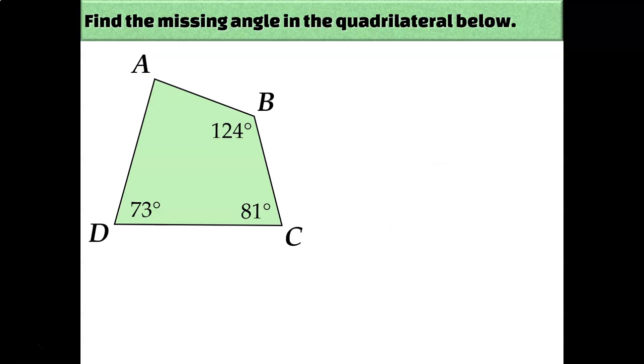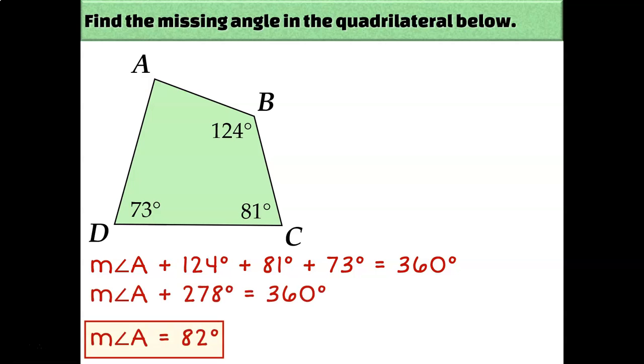So we can use that information to help us calculate missing angle measurements in quadrilaterals. Since I know that this is a four-sided figure, I know that the sum of the interior angle measurements must be 360 degrees. So I could write an equation that looks like this. The measure of angle A plus 124 plus 81 plus 73 equals 360. And when you solve that, you find out that the measure of angle A must be 82 degrees.